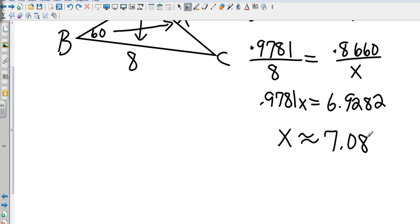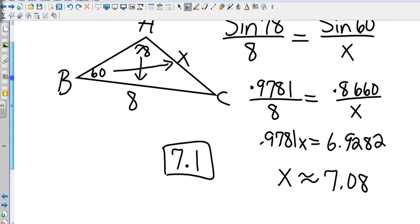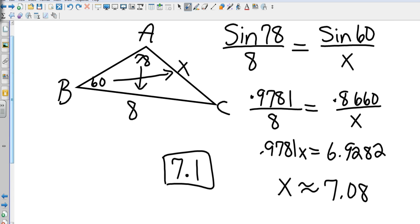And that gives me an approximation of 7.08. In this case they have asked us to round to the nearest tenth, so that's going to be 7.1. Okay, that's the Law of Sines.